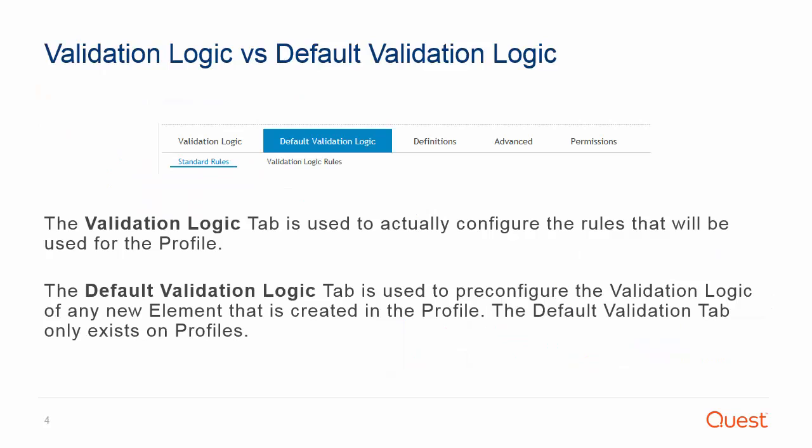There are two validation logic tabs on profiles: validation logic and default validation logic. These two different tabs are often a source of confusion when new to configuring Desktop Authority's validation logic. The validation logic tab is used to actually configure the rules that will be used for the profile. The default validation logic tab is used to pre-configure the validation logic of any new element that is created within a profile. The default validation logic tab only exists on profiles.